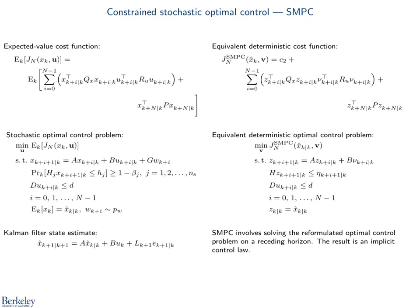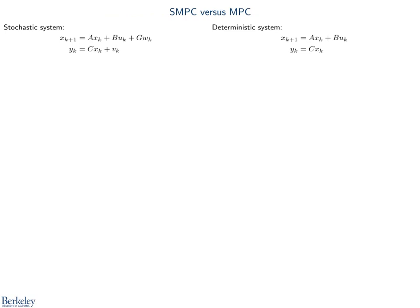Just like in standard MPC, the result is an implicit control law. Now, comparing stochastic MPC and standard MPC, we have the stochastic system on the left and the deterministic system to which MPC is applied on the right.